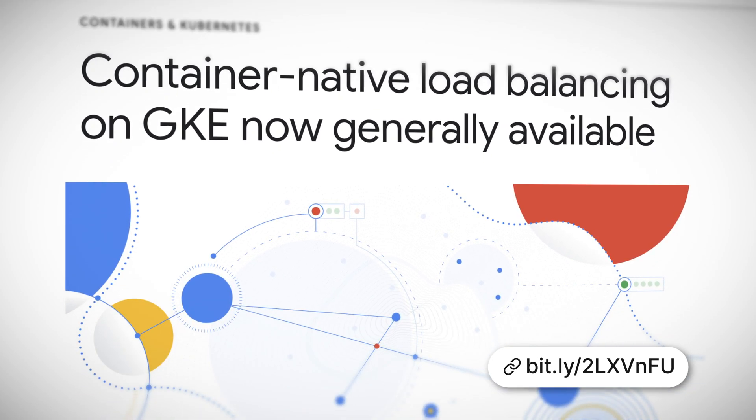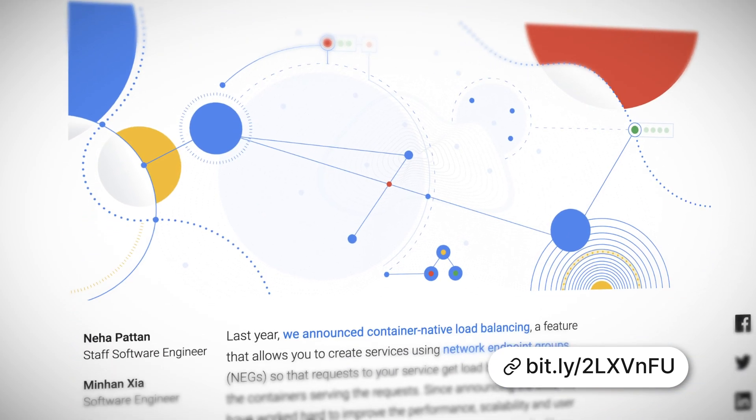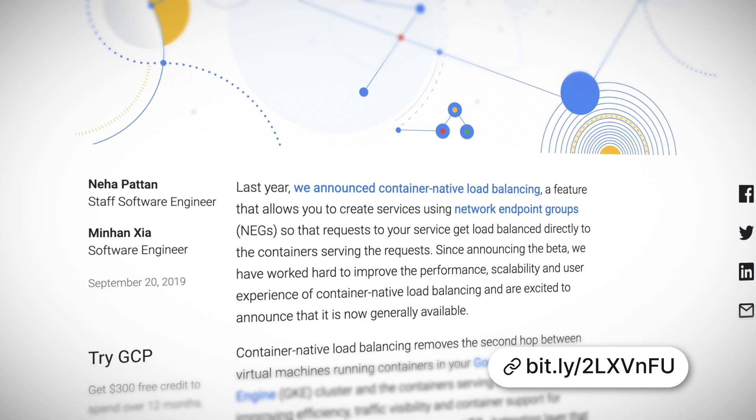GKE announced general availability of container-native load balancing — so what even is that and why is it important? It's load balancing that knows and understands containers. In a typical load balancing scenario, traffic hits a service endpoint, gets load balanced to a cluster node, the node does an IP tables lookup, and eventually your traffic reaches a container. Container-native load balancing has intelligence built in that understands your containers, so it can skip the step of going to the node and doing the expensive IP tables lookup. The net result: better performance and better traffic visibility.